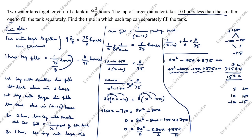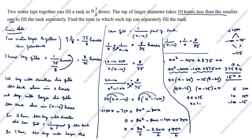Rewriting: 4x² minus 100x minus 15x + 375 = 0. Grouping: 4x(x minus 25) minus 15(x minus 25) = 0. So (4x minus 15)(x minus 25) = 0. This gives x = 15/4 = 3.75 or x = 25.